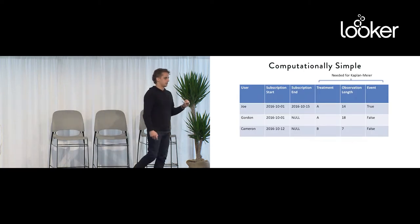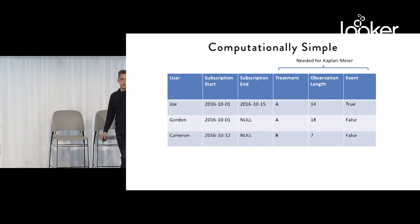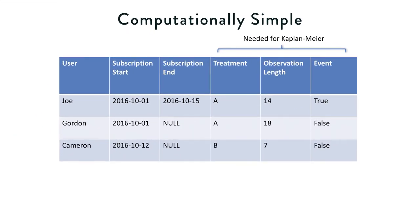It's also computationally simple. You don't have to do this crazy big join to figure out one row per user per week if you want to analyze that. All you need is you need to have one row per user. You need to know their observation length. And then you need to know whether or not they had the event, whether they had the event or they were censored. Once you're at this point, with some relatively straightforward window functions, you can calculate all of your marginal probabilities at all of these periods, and then you're basically done.